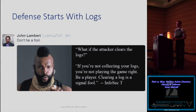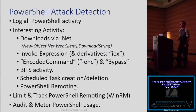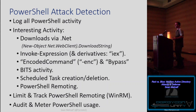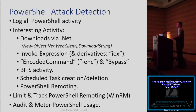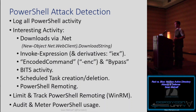Defense starts with logs. If you're not logging the data, you won't track attacks. For PowerShell attack detection: log all PowerShell activity and configure PowerShell module logging to get detailed log data. Lee Holmes' session covers PowerShell security, especially in version 5. Look for interesting activity like .NET downloads, Invoke-Expression, encoded commands, or BITS activity. If you have PowerShell remoting in your environment and it's not being used, disable it — it's a great vector for attackers. You can limit PowerShell remoting to specific admin subnets by configuring the WinRM listener.